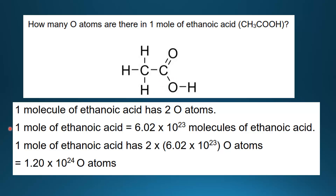One mole of ethanoic acid is equal to Avogadro's number of molecules. Remember that a mole of anything has Avogadro's number of particles — that's ions, atoms, or molecules. So one mole of ethanoic acid has two times Avogadro's number of oxygen atoms. When we multiply Avogadro's number by two, we end up with 1.20 times 10 to the 24 oxygen atoms.